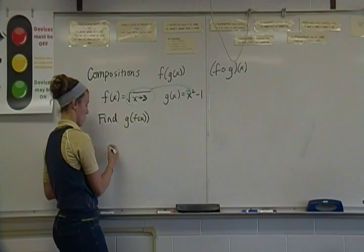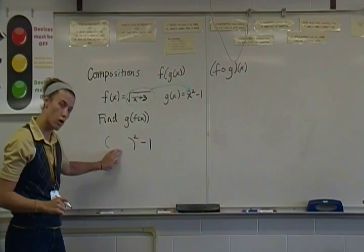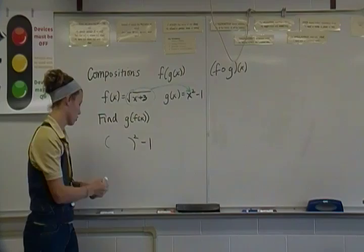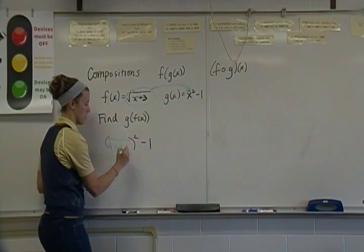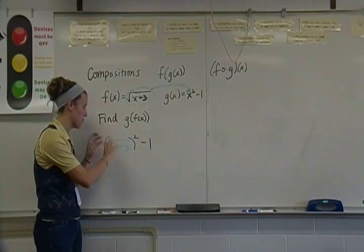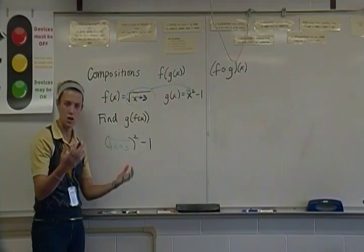If I start out with my g equation on the outside, I have quantity squared minus 1. And now in for x, I'm not going to write x this time. I'm putting that f function, my first one here, inside. So I have the square root of x plus 3, and I put that inside of my equation. Now normally, if this was just a binomial without that root there, we would have to multiply that out by itself. So it would be x plus 3 times x plus 3. Use the box method to simplify that.